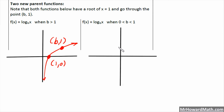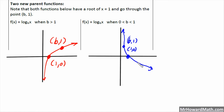When the base is between 0 and 1, the graph goes the other way. It still has the point (1, 0) and the point (base, 1). Since the base is fractional in this case, the x-coordinate is between 0 and 1. We would also have the point at the reciprocal of the base, comma negative 1. That point would also be on the graph, similar to how we worked with exponentials.